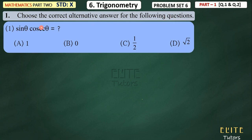First question — what is written in question number 1? Choose the correct alternative answer for the following question. This is the first question of the problem set. You have to select one option that is correct. What is written in question number 1? Sin theta multiplied by — and you can also write a dot — and it means multiplication.